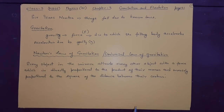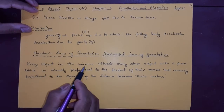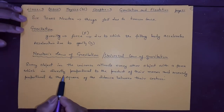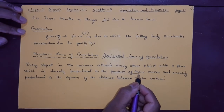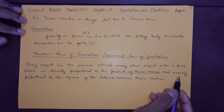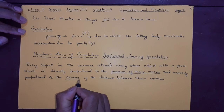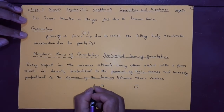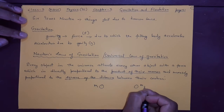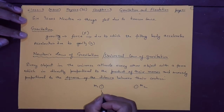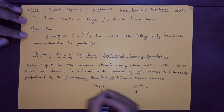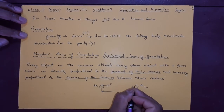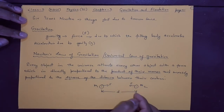The statement says: every object in the universe attracts every other object with a force that is directly proportional to the product of their masses, and inversely proportional to the square of the distance between them. Suppose we have mass m₁ (in kg) and mass m₂ (in kg), and the distance between their centers is d. Then there is a force F with which each object pulls the other.